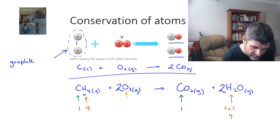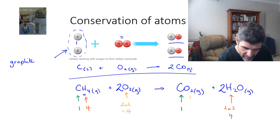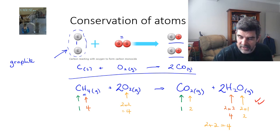And here I have 2 times 2 which is 4 and then for oxygen I have 2 times 2 which is 4. And I have 2 here and here 2 times 1 which is 2 and 2 plus 2 is 4. So once again, my equation is balanced.